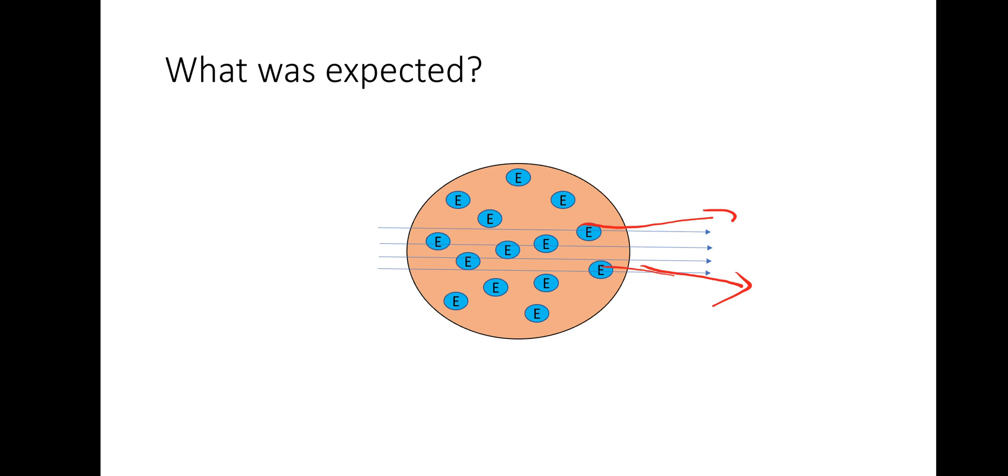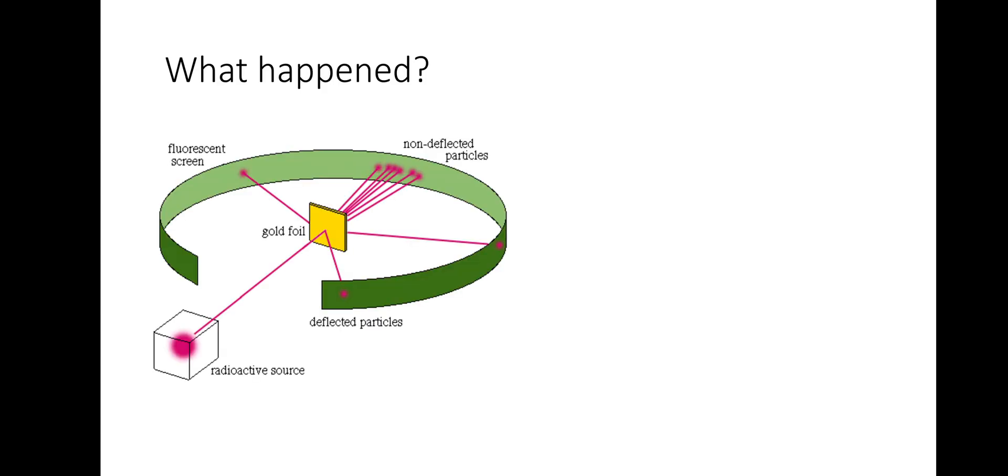However, something else actually happened. So when the radioactive source of the alpha particles were fired at the gold foil, most of the alpha particles actually did pass straight through the gold foil.